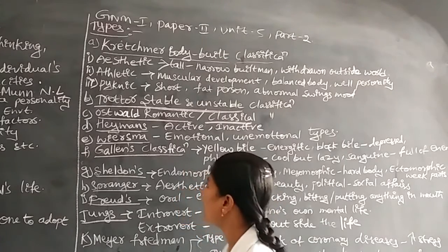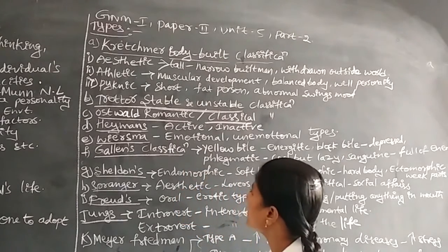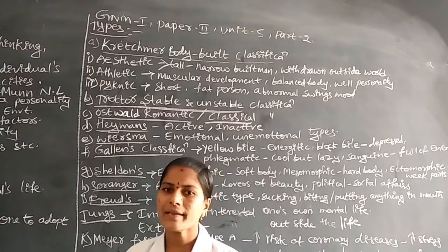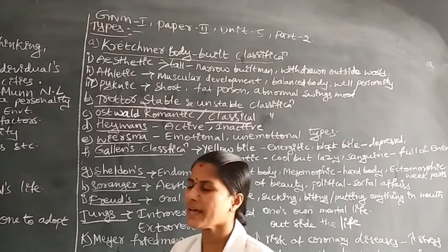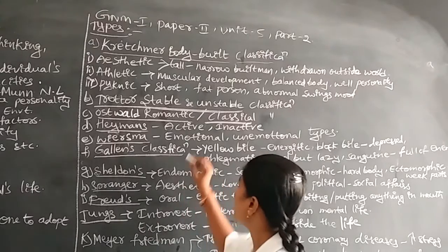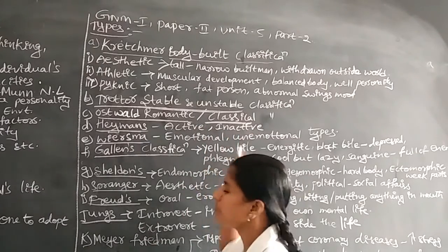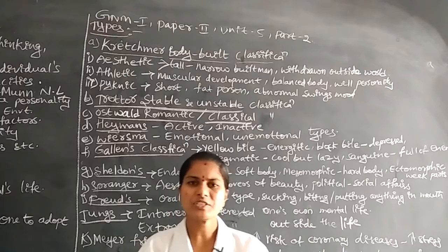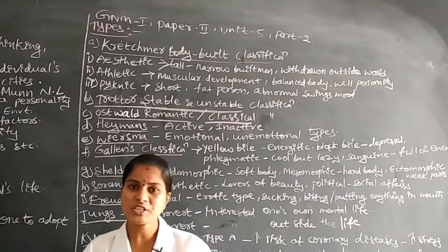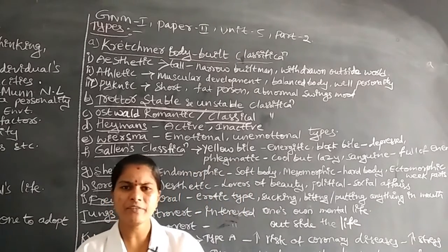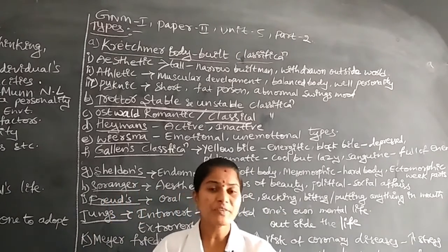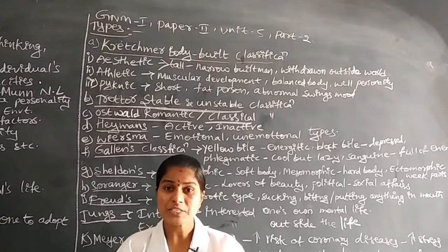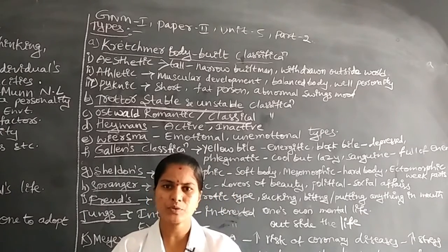Next is Hermann's classification. In this, individuals have active or inactive personality. In each and every situation, occasion, and moment, active personality individuals actively participate. They feel responsible — 'This is our duty, this is our responsibility, this is my work, we have to do it.'